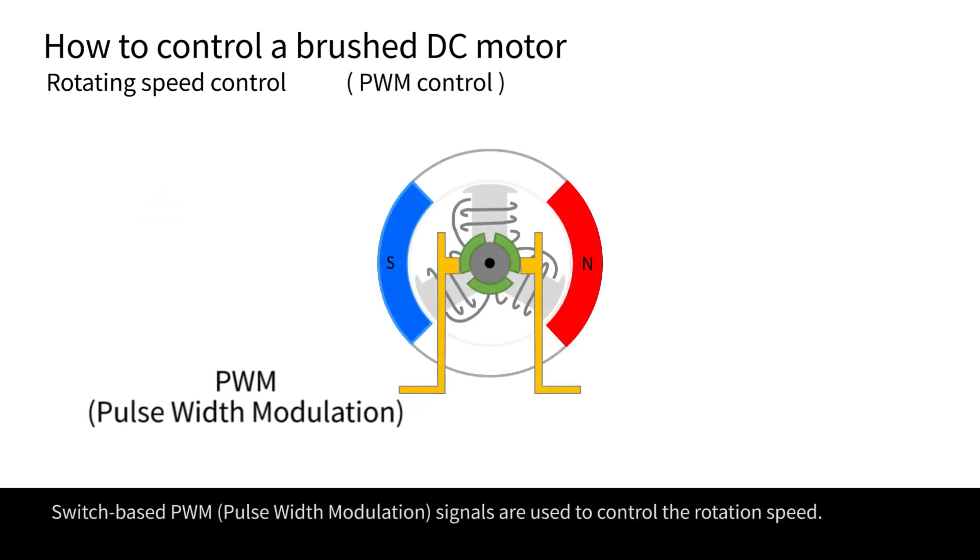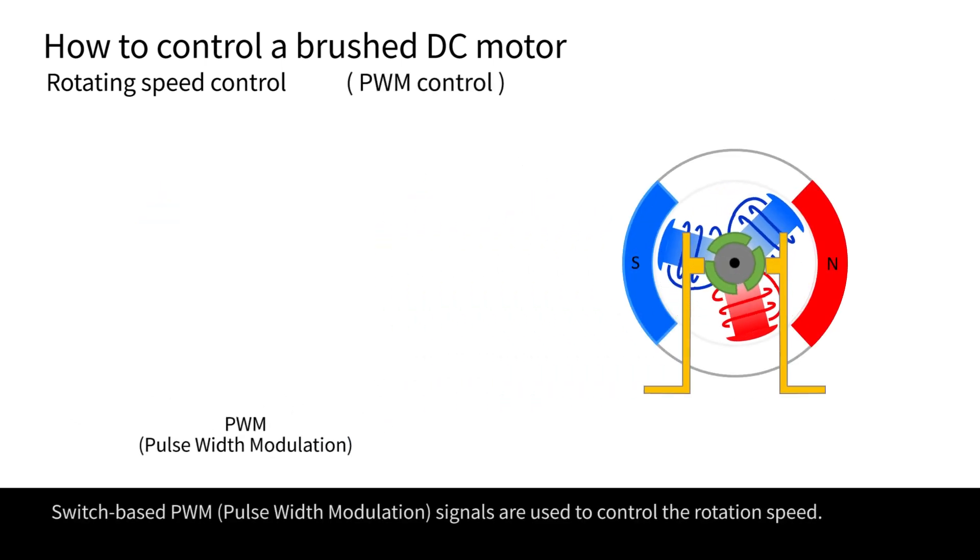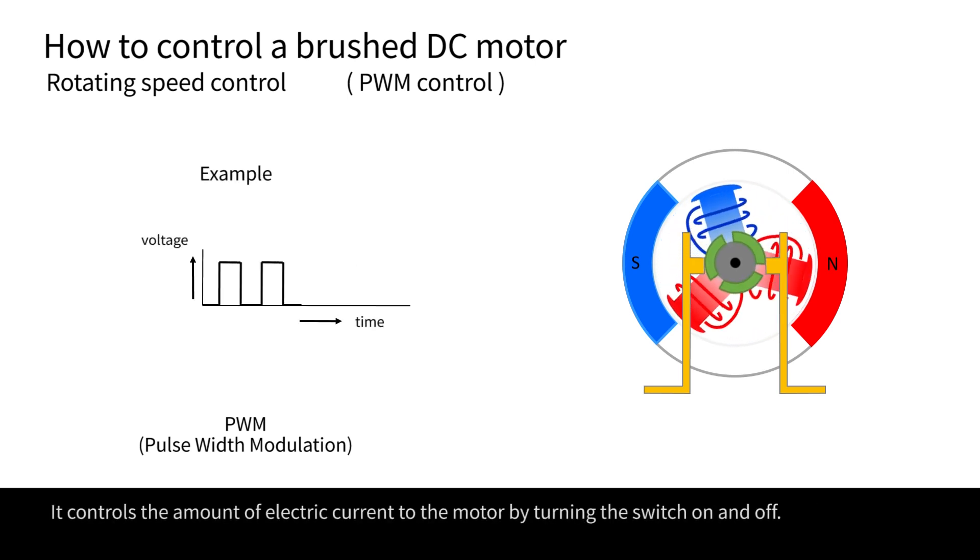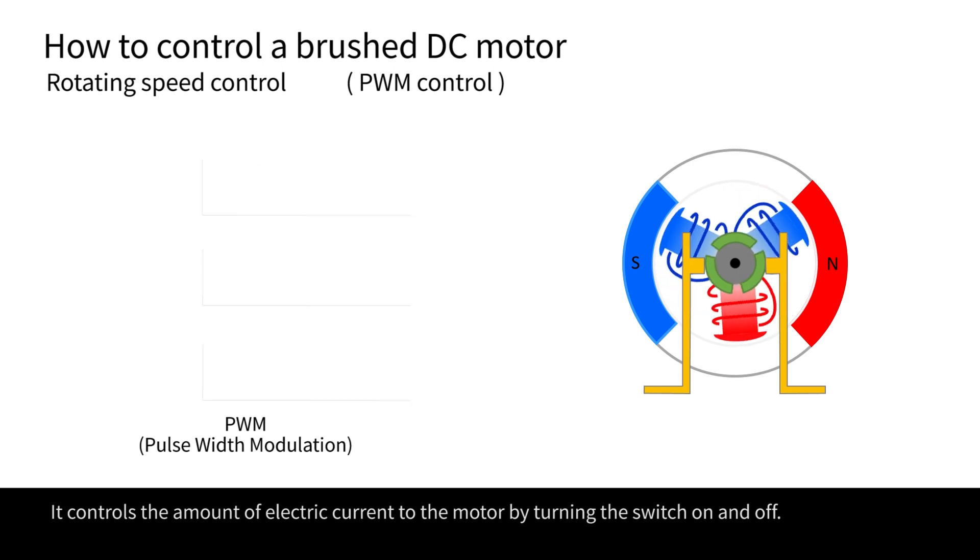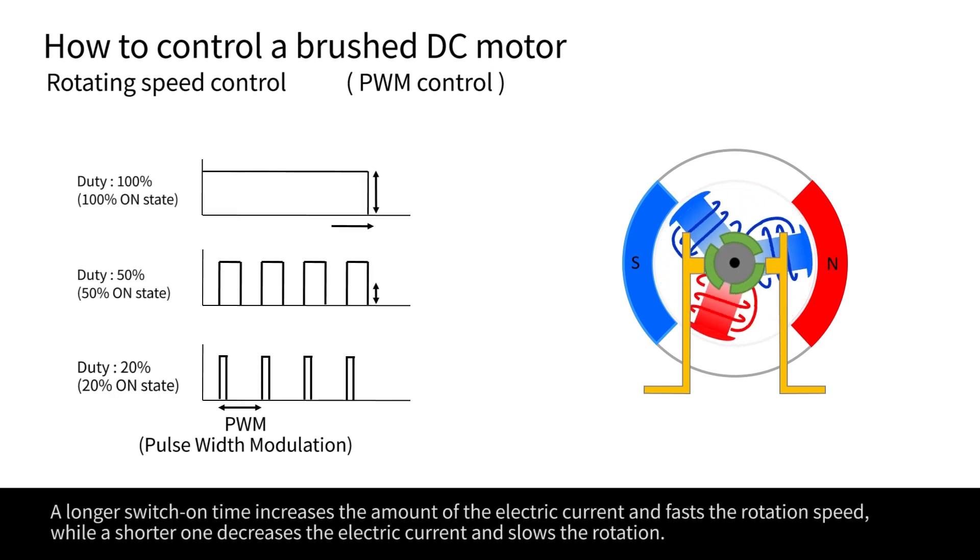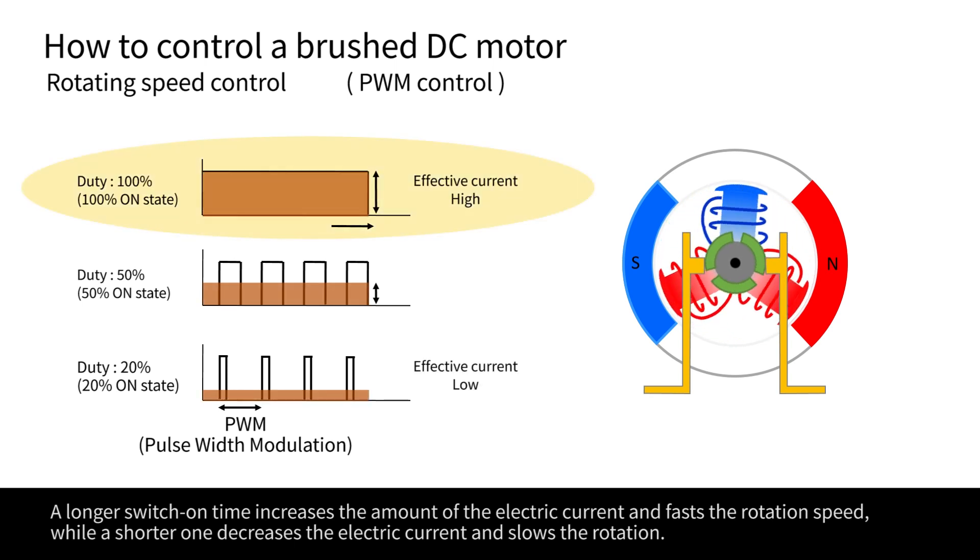Switch-based PWM, pulse width modulation signals, are used to control the rotation speed. It controls the amount of electric current to the motor by turning the switch on and off. A longer switch on time increases the amount of the electric current and increases the rotation speed, while a shorter one decreases the electric current and slows the rotation.